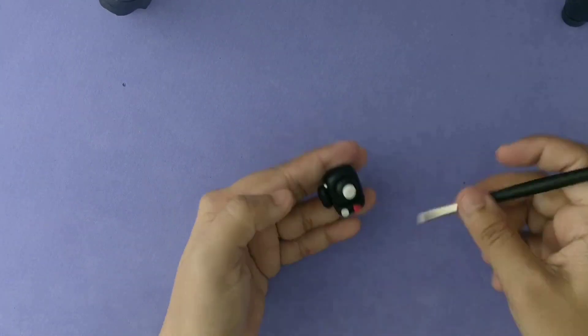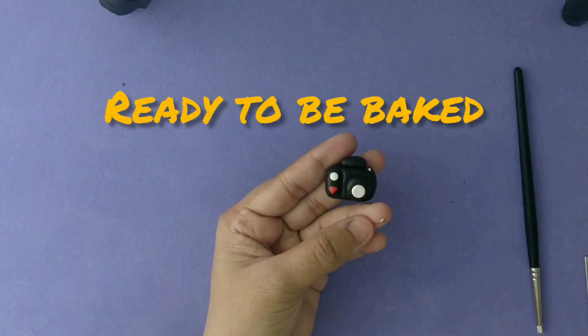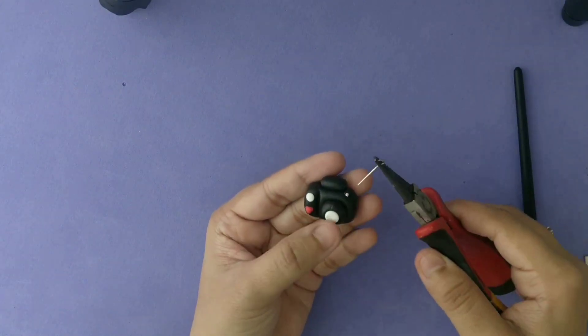Once the sculpting is done, the camera has gone into the oven to be baked. And after that, the point comes where again we assemble the keychain.